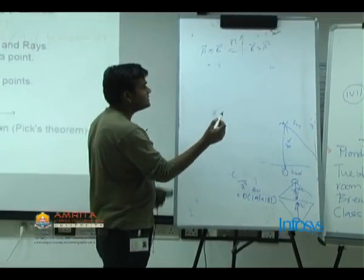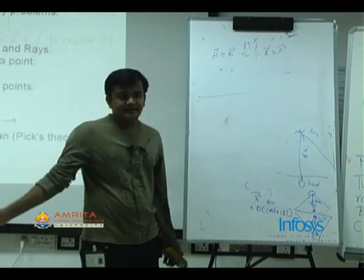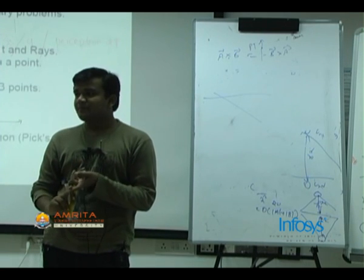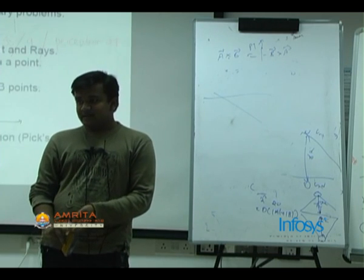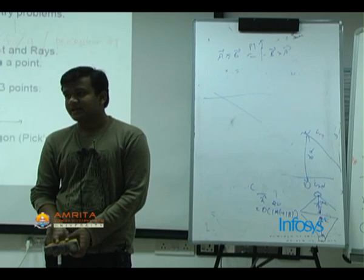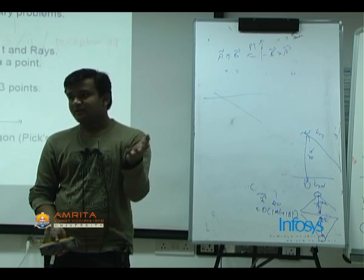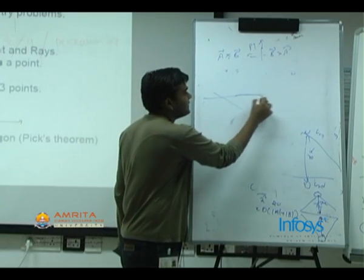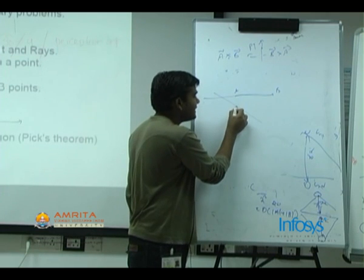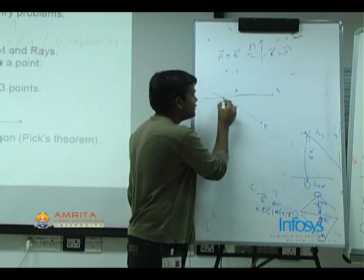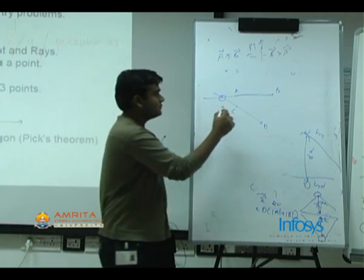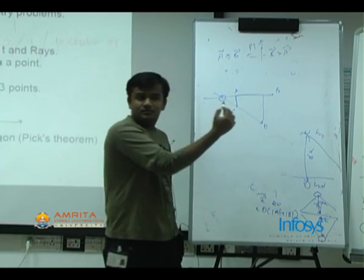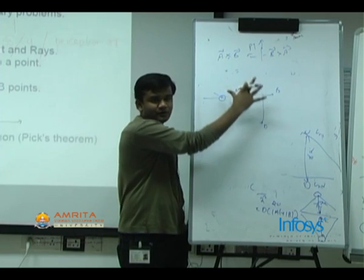The next important thing is finding the intersection point of two lines. First, you need to check if the lines are parallel or concurrent — if so, there is no intersection point; otherwise it is unique. If they are not parallel, let's say line 1 is defined by points A and B and line 2 by points C and D. Point C will have a distance from line 1, and point D will also have a distance from line 1. So you calculate the distance of both these points from the other line separately.